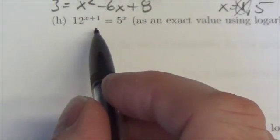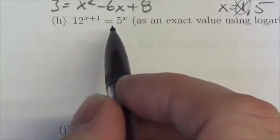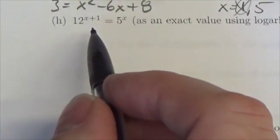So notice I've got 12 to the x plus 1 is equal to 5 to the x. The bases are not related so I can't just write everything in terms of the same base here.